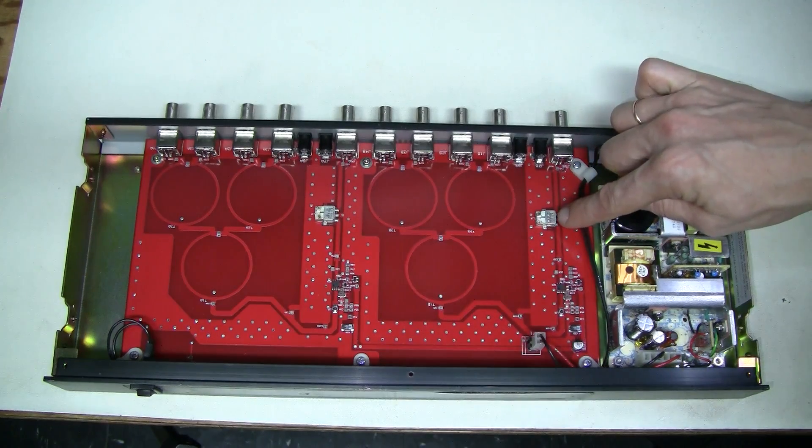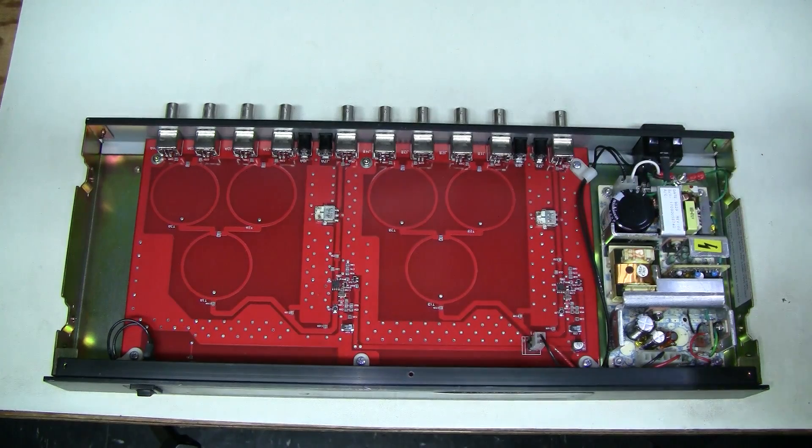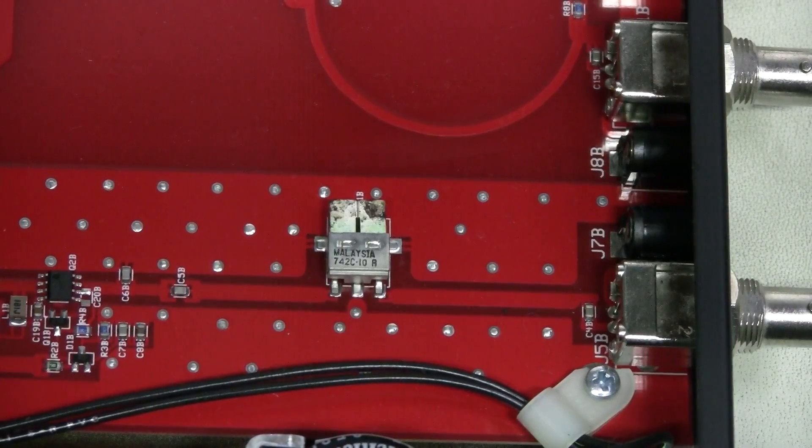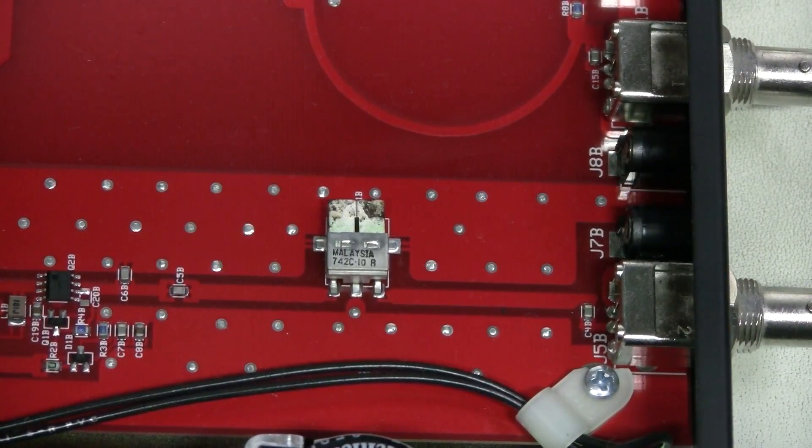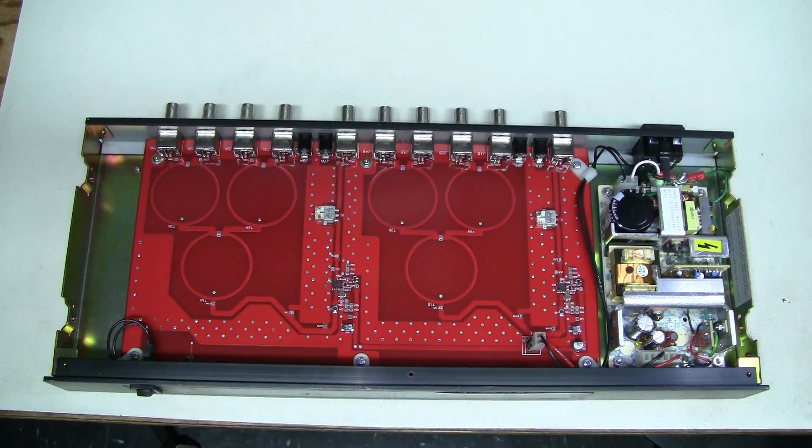So, this is a ceramic filter marked 742C. And I think it means 742 MHz center frequency. So, I am thinking about removing this filter for now, just for testing. Putting a jumper instead.